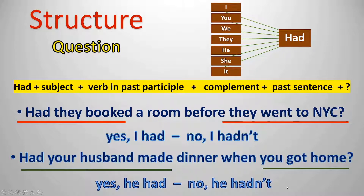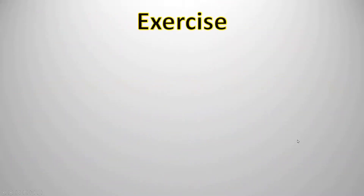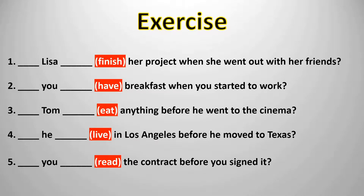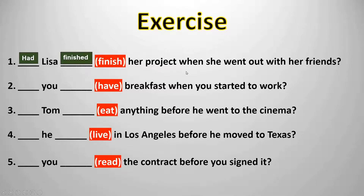Now we have the first exercise to practice. We have five questions in past perfect. Remember that all questions in past perfect start with the auxiliary 'had', and the verbs shown in red have to be changed into past participle. For example, number one: 'Had Lisa finished her project when she went out with her friends?'